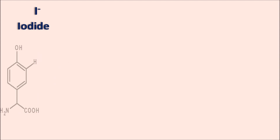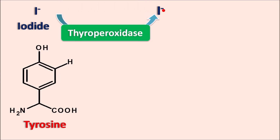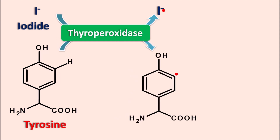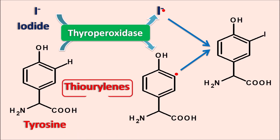For synthesis of thyroid hormones, two important molecules are required: iodide and tyrosine. Tyrosine interacts with iodide in the presence of thyroperoxidase enzyme to undergo iodination through a free radical mechanism. Initially, iodide is converted to an iodide free radical by thyroperoxidase in the presence of hydrogen peroxide, and the same enzyme converts tyrosine into a tyrosine free radical by removing a hydrogen. The tyrosine free radical and iodide free radical then combine to produce mono-iodinated tyrosine, and similarly di-iodinated tyrosine. Thiourelians block this thyroperoxidase-mediated iodination.